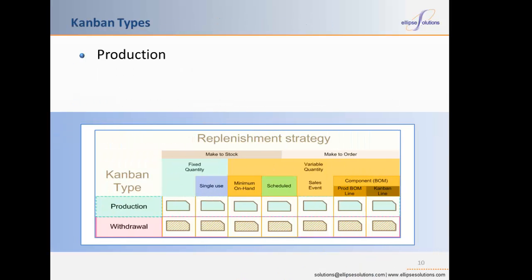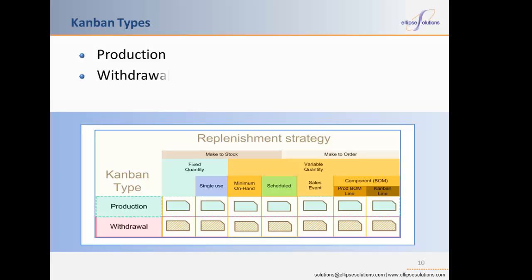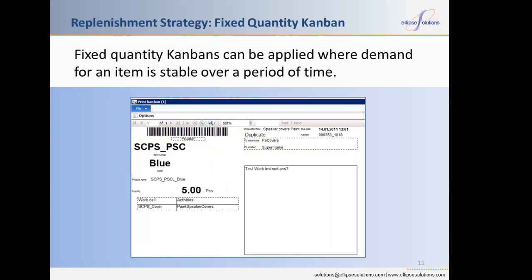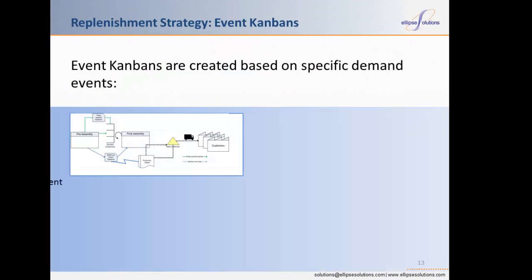Microsoft Dynamics AX 2012 supports three types of Kanbans: production, withdrawal, and purchase. Production Kanbans are used to signal the need for production. Withdrawal Kanbans are used to move a specific item between supermarkets, warehouses, and production locations. AX 2012 purchasing processes are designed to support pull purchasing while using normal purchase orders to carry demand, delivery, and invoicing information. This approach allows the full range of purchase operations including EDI integration and the usage of enterprise portal for the vendor to view and update purchase information. AX 2012 supports both make-to-stock and make-to-order replenishment strategies, with fixed quantity Kanbans for make-to-stock and event Kanbans that respond to specific demand events.